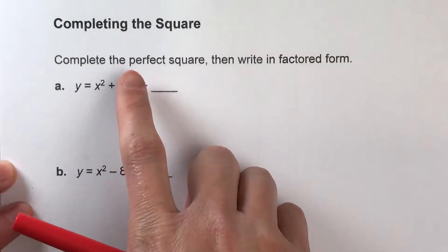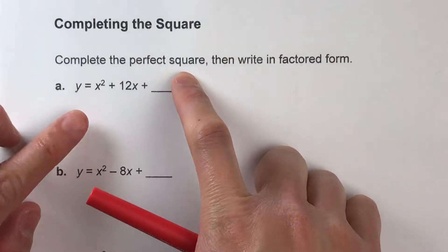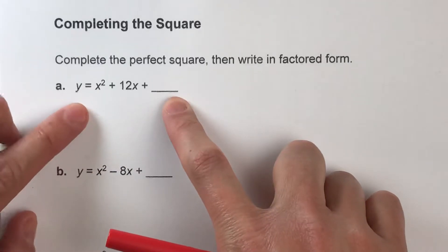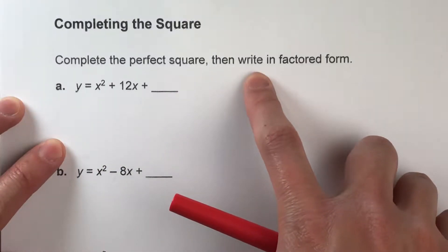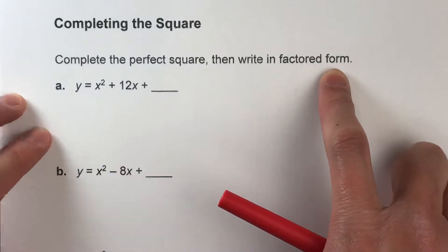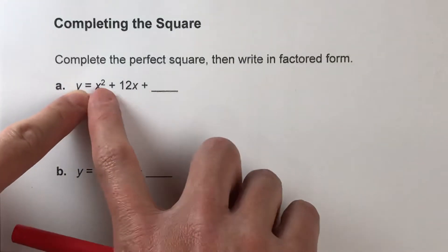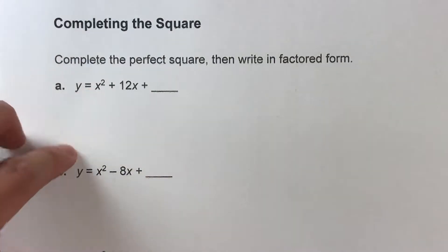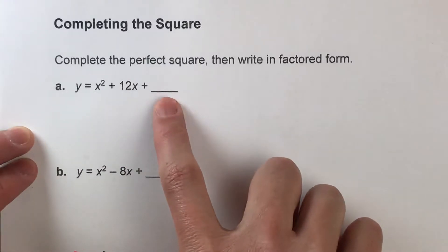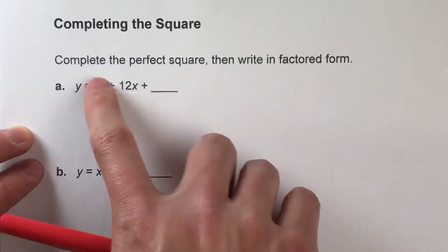So today we are going to learn how to complete the square so that we can make a trinomial a perfect square. And then we're going to write our final answer in factored form. So this is a trinomial, it has three terms, and it has a power of 2 on the x. What we're trying to do is figure out the third term so this is a perfect square.